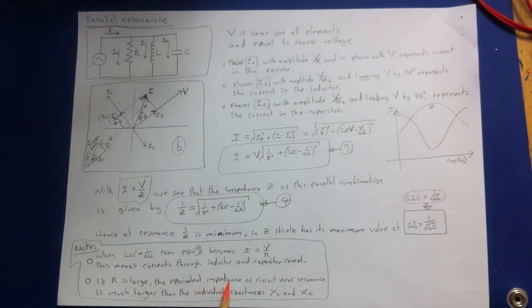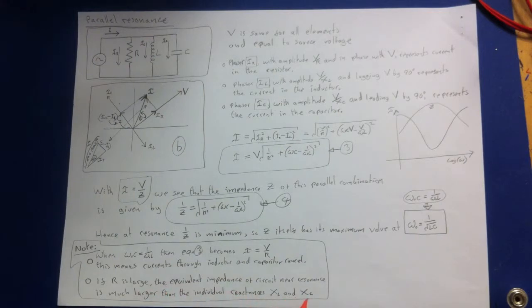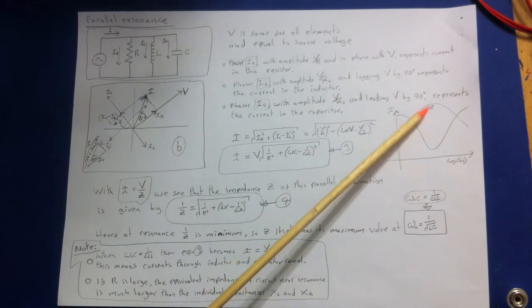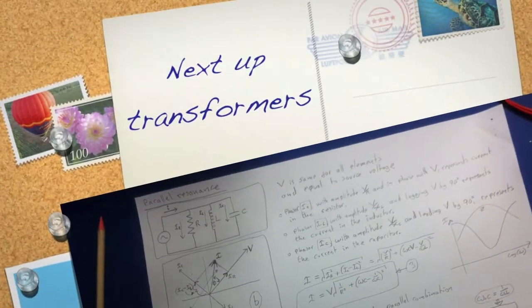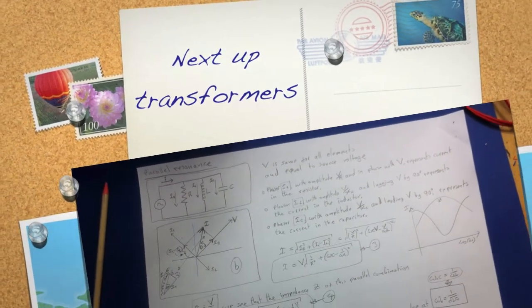If R is large, the equivalent impedance of circuit near resonance is much larger than the individual reactances, XL and XC. So what you end up with is a very high impedance here. When there's a large impedance, you get less current flow. So this is exactly the reverse of what we had with the series resonant curve.